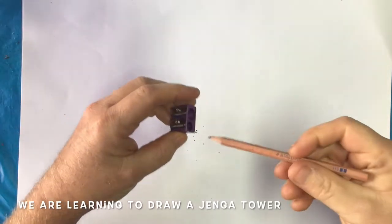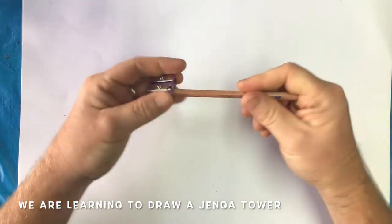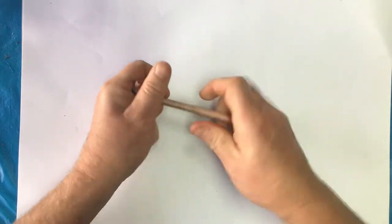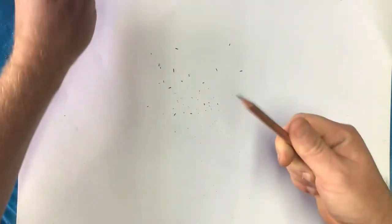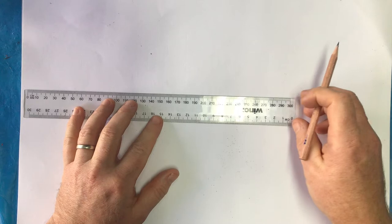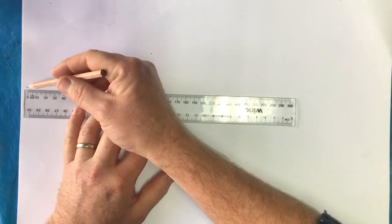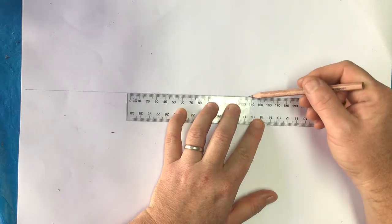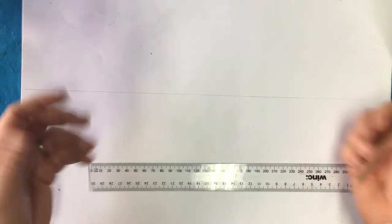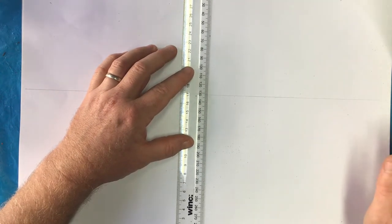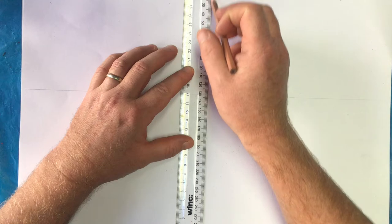Today we're going to use two-point perspective to create a really cool Jenga tower. This is a pretty tricky one — you can make it as easy or hard as you want, but we're going to make it tricky. The first thing we're going to do is create a horizon line through the middle, doing this very lightly because I'm going to rub some of it out. Then I'm going to create a vertical line down the middle.